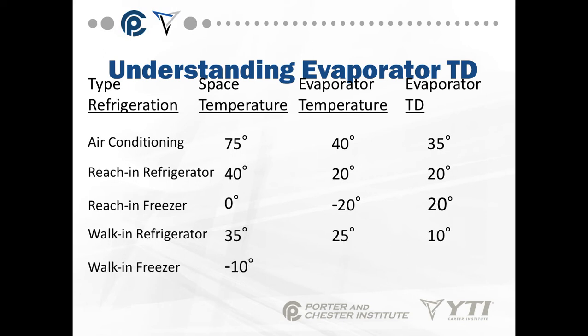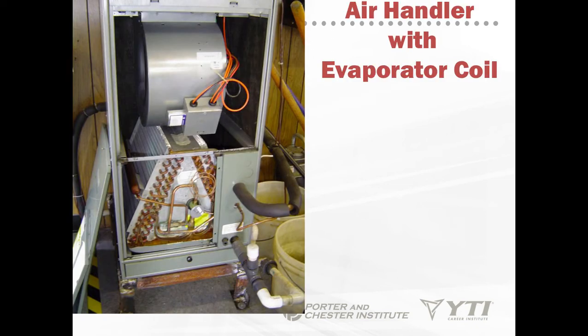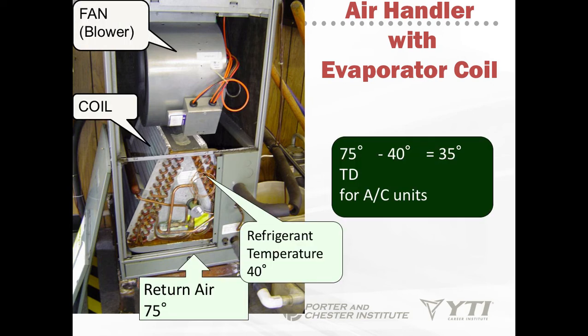Walk-in freezer: space temperature -10°F, evaporator temperature -20°F, temperature difference 10°F. For an air handler with an evaporator coil in an air conditioning system, we have return air coming in at 75°F and a 40°F refrigerant temperature — so the temperature difference is 35°F. We don't want our coil below freezing.